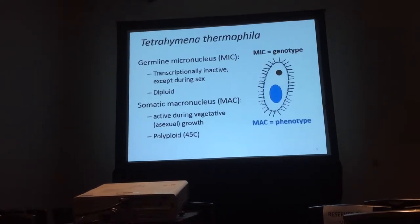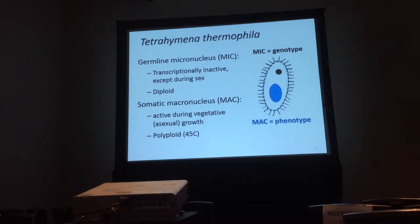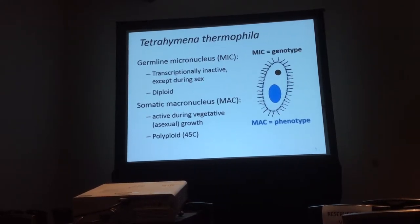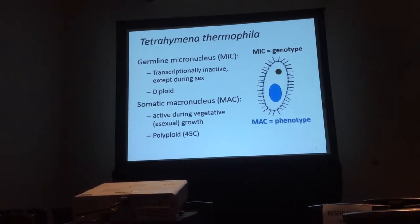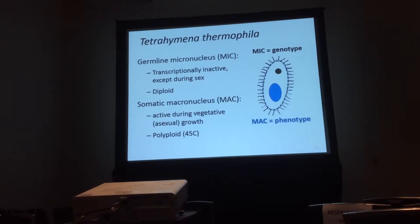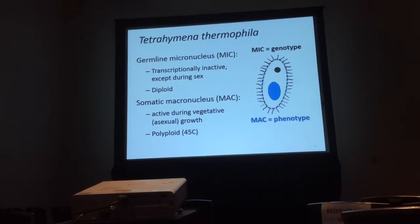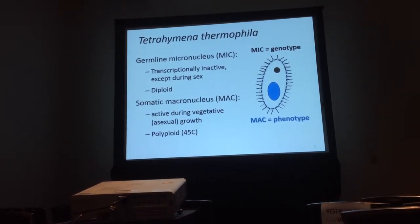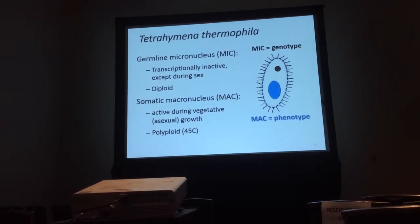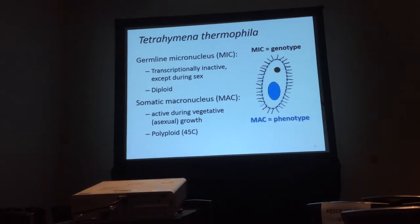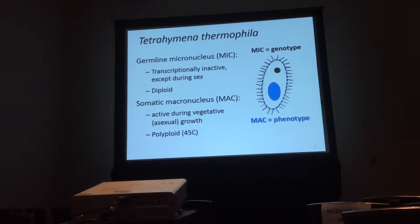Here's a little background on Tetrahymena biology. The species I study is Tetrahymena thermophila, and this is how their two genomes work. They have a germline micronucleus — which I may call the germline interchangeably. This genome within the micronucleus is transcriptionally inactive except during sex. It is diploid, so this would be a genotype that might be hidden until after sex. After sex, the somatic macronucleus is developed from this micronucleus, which is active during vegetative or asexual growth. This genome is polyploid — there are 45 copies of every single chromosome within that macronucleus. This is what is going to be exposed to selection.